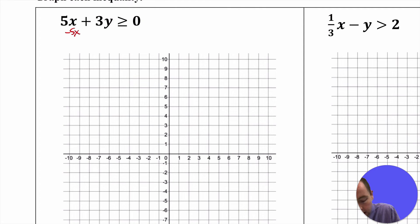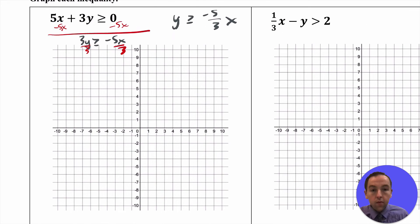So if we were to solve this, you could first subtract 5x on both sides so that we get closer to getting y alone. Because you're subtracting, the symbol does not have to flip. So we end up getting that 3y is greater than or equal to negative 5x. And then from there you can divide by 3. That's dividing by a positive, so you do not need to flip the symbol. And then you end up getting that y is greater than or equal to negative 5 thirds x.